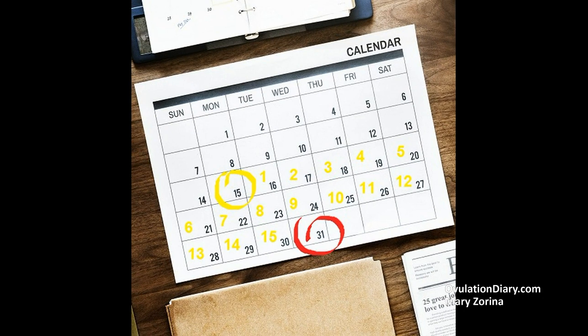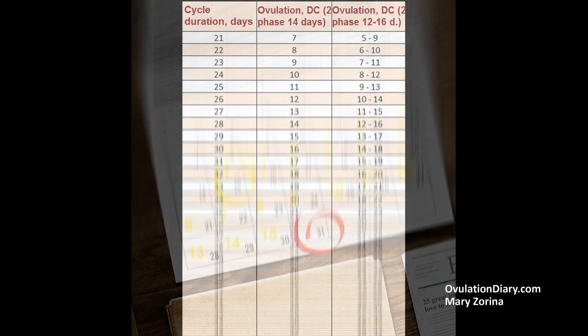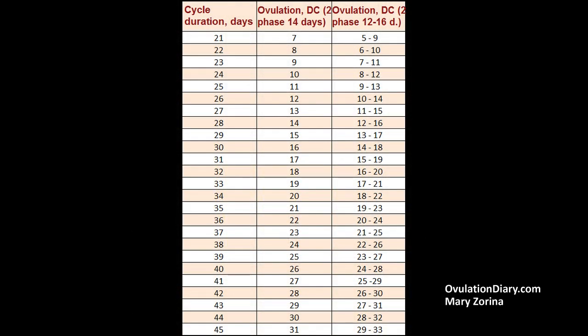Formula for calculation: Ovulation Day by Menstruation. To determine the date of ovulation, it is necessary to subtract the length of the second phase, which begins immediately after the release of the egg, from the cycle length. For example, a cycle of 31 days, the luteal phase (phase 2) is 15 days, then ovulation will be on the 16th D.C. If the length of the second phase is unknown, you can use the average duration of the second phase in the formula: 14 days.